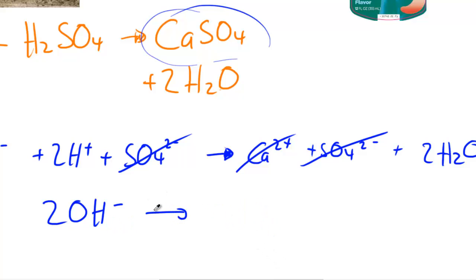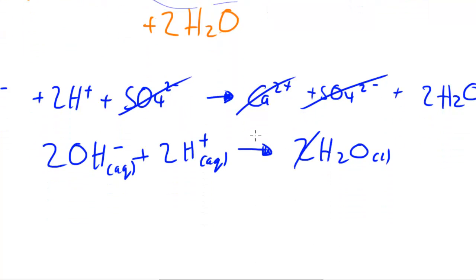Let me get rid of the arrow, this should be a plus. 2H+ and that produces the 2H2O, aqueous and liquid. So this is the simplified, well not fully simplified. If I get rid of the 2s now we've got a simplified reaction.